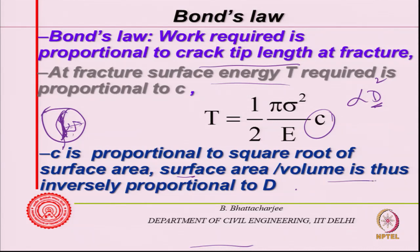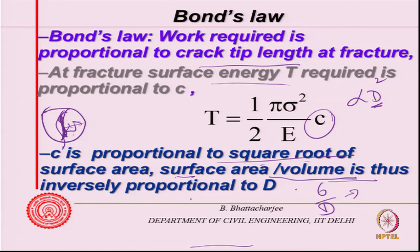Surface area per unit volume - we have seen that it was 6/D. If I reduce the size down, C is proportional to the square root of surface area per unit volume, which is inversely proportional to D because this comes to 6/D. So C is inversely proportional to D.